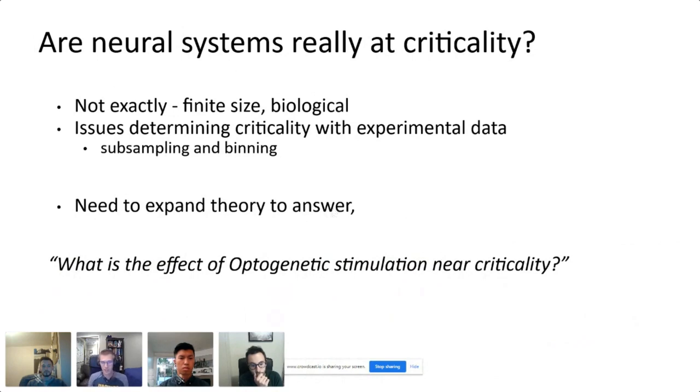We wouldn't expect them to be poised exactly between these two phases. And there are other issues with determining criticality with experimental data, like subsampling and binning. So it would be nice to have a theory which goes beyond criticality, which includes near critical systems. And we can ask what is the effect of optogenetic stimulation, and answering this question would explain the experimental findings that we have.